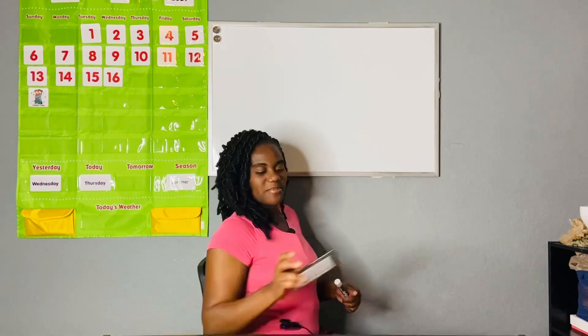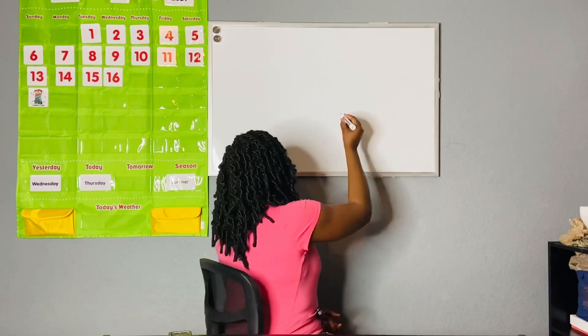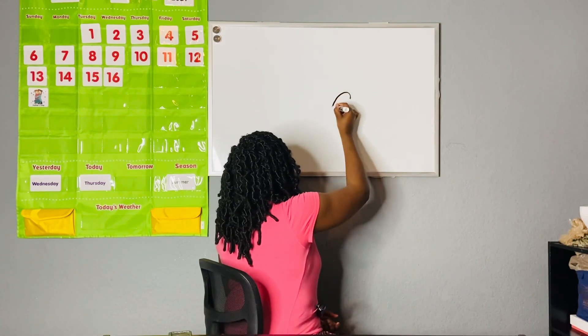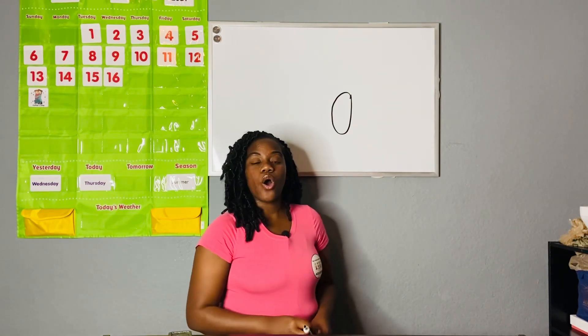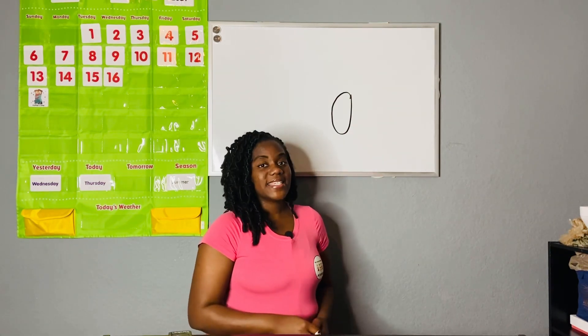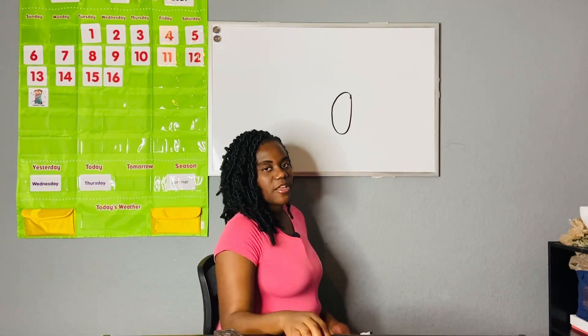Our next shape — help me out, what do we call this shape? Did you say an oval? If you said an oval, you are correct! Let's draw an oval. An oval just goes like this — it looks like the shape of an egg.